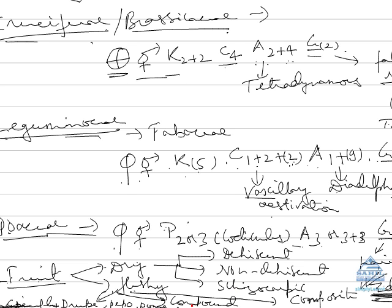Compound fruit which is mixture of fruits like compound achene is strawberry, compound berry is Annona or custard apple. Similarly we have composite fruit which are of 2 types: sorosis and syconus.